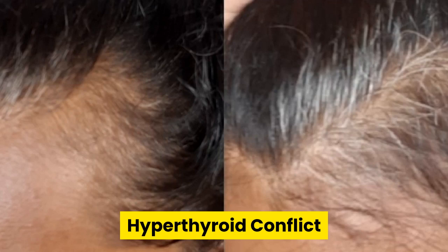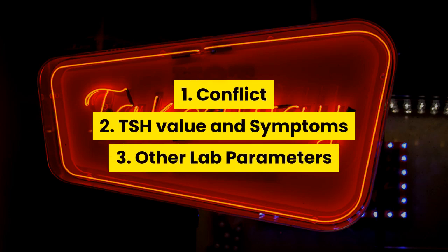The key takeaways are: first, focus on identifying the exact conflict or conflicts and work on resolving or downgrading them. Don't just focus on TSH value — also do temperature and pulse tests and focus on your symptoms. If you experience better digestion, better bowel movements, better sleep, better energy, better sex drive, better mood, better appetite, better health, and better hair, that is a sign of improvement — no matter if your TSH is not improving at the same rate. Look at parameters like RBC magnesium, iron profile, vitamin D, and ceruloplasmin, and see if you can get minerals and vitamins from food.